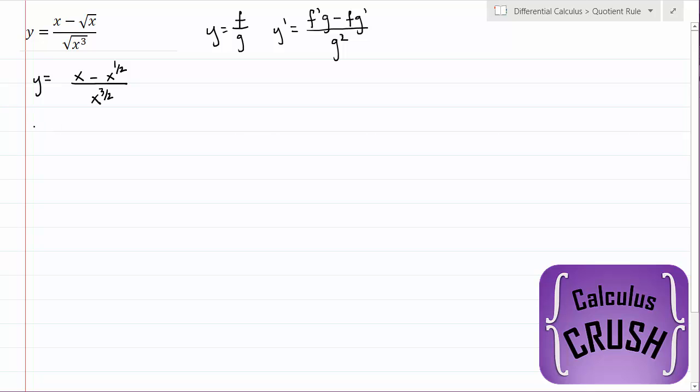Now let's take the derivative. So y prime equals, now we need to identify what is the top and what is the bottom in order to apply the quotient rule. It's very, very simple for this question. This, of course, would be our top or our f. And then down here, this guy x to the power of 3 halves, that would be our bottom.